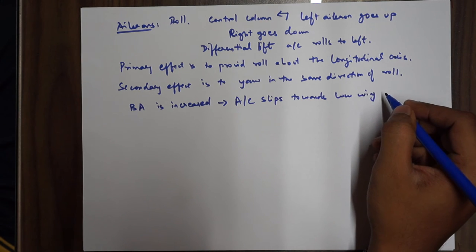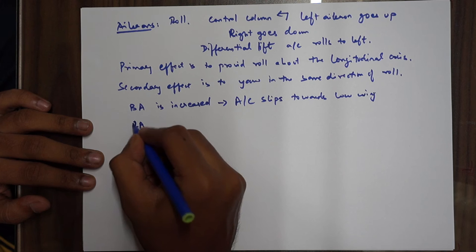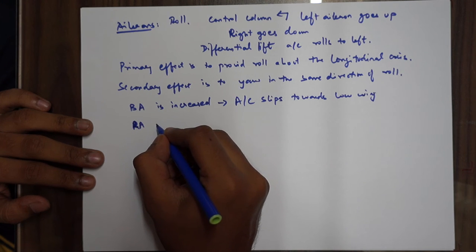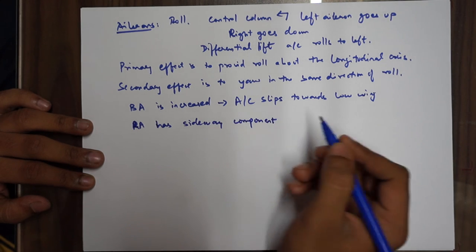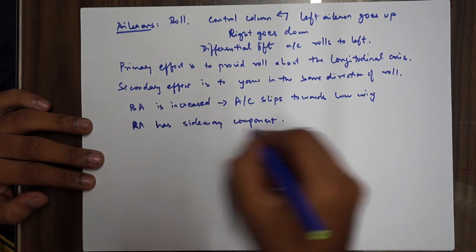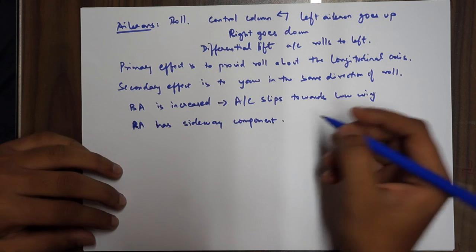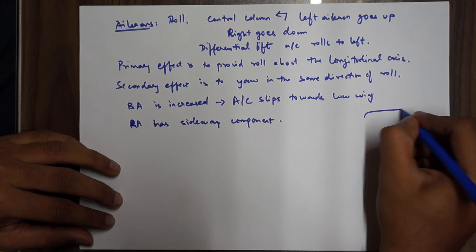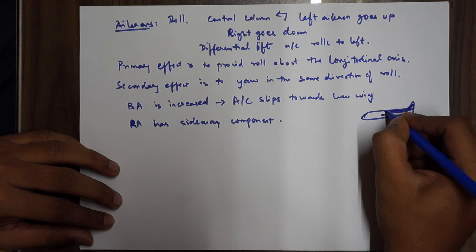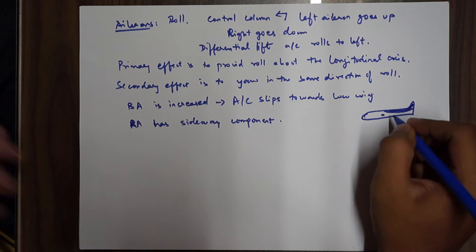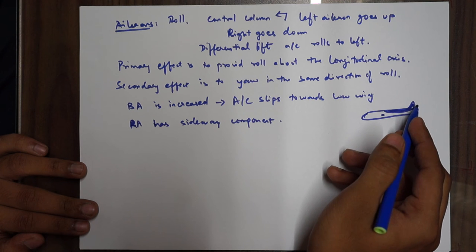The relative airflow has a considerable sideway component. Because of this sideway component, the distribution of the keel surface — which is generally more behind the CG, as discussed in the last video — causes a yaw. Since the relative airflow has changed, and the keel surface distribution is more behind the CG than in front, the aircraft yaws to the direction of roll.